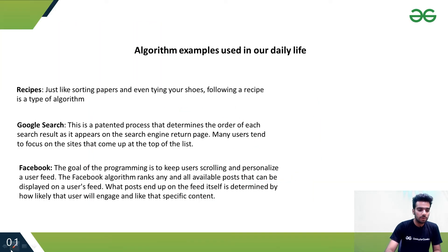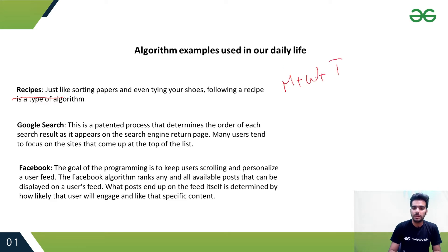Some daily life examples of Algorithm: the first one is a Recipe. For example, to make tea, you add some milk, then water, then tea, then you boil it. This set of rules or operations you perform to get the tea is known as an Algorithm.